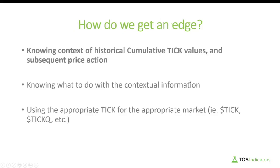Before we start building this indicator, let's answer the question: how do we get an edge? Now that you know what the cumulative tick is, having a historical value, knowing what it's typically been, knowing what are considered extremes — all of that gives you an idea of what the tick value is, what it's been, what the anomaly is, and how to take advantage of that. That is the most critical key advantage compared to what most people look at, which is just the raw cumulative tick value.